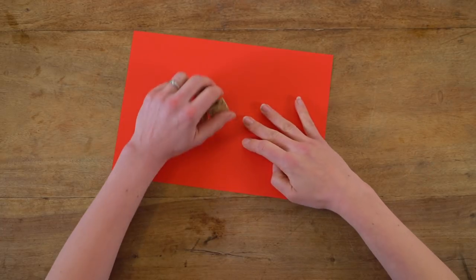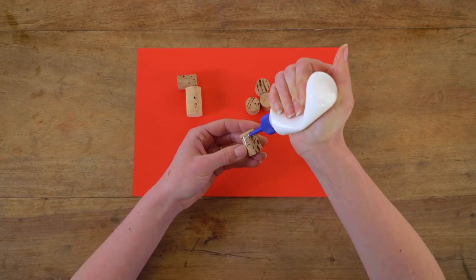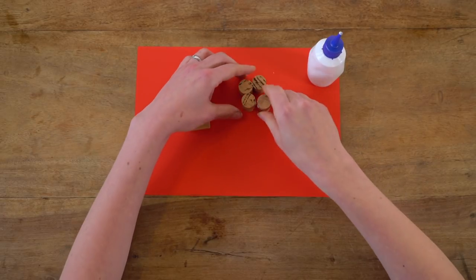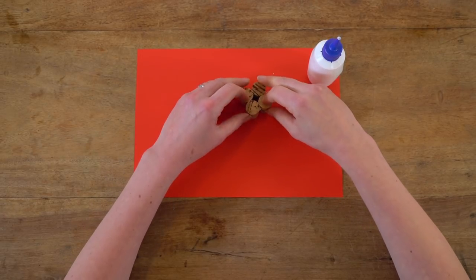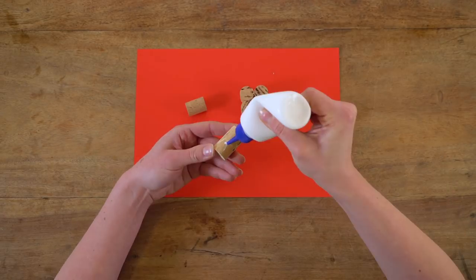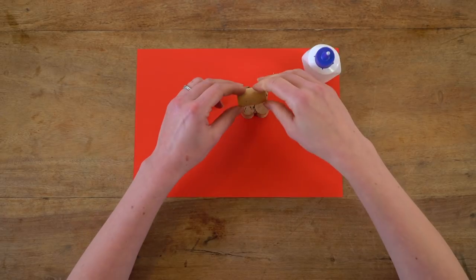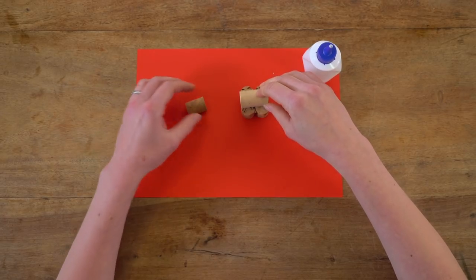First of all take four corks of equal size and glue them together to form a square shape. These are your legs. Then glue one cork lengthways and stick it across the legs to make your reindeer body.